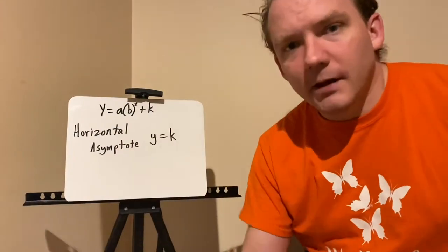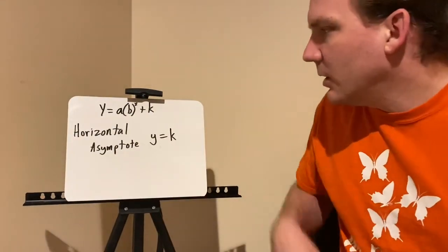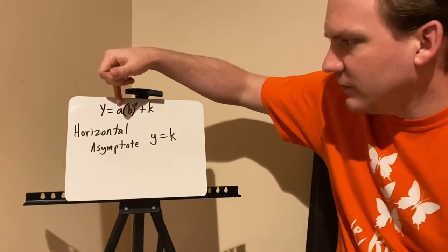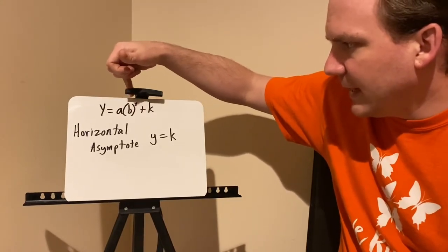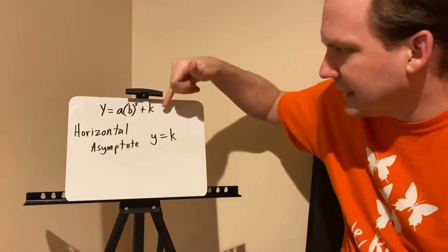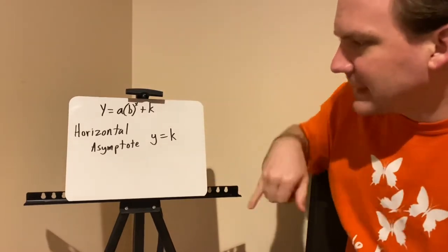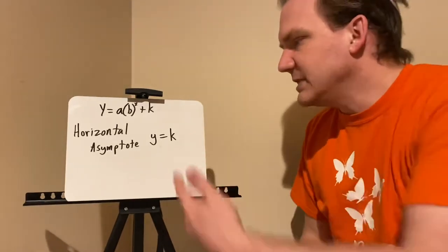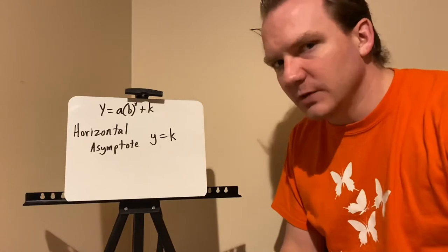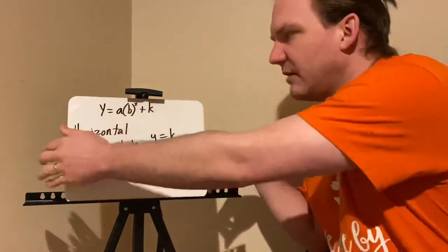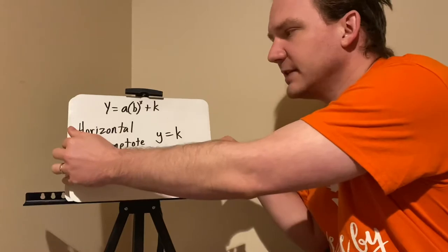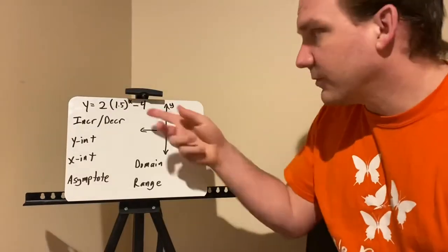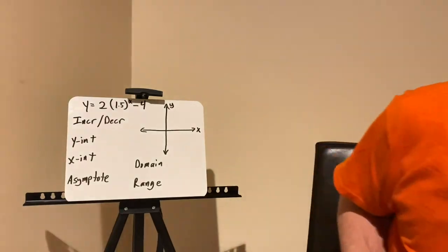Another way to write exponential functions is y = a times b to the x, plus k, where k is the horizontal asymptote. In all the examples so far, k was zero. But k can have a value, which shifts the graph. k could also be negative, in which case you'd see subtraction instead.